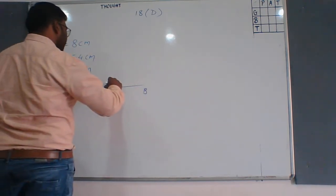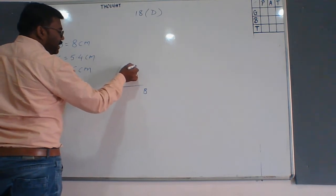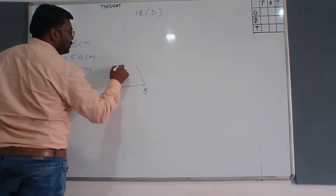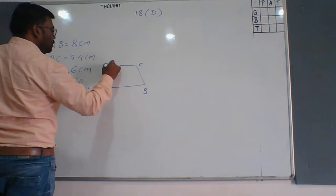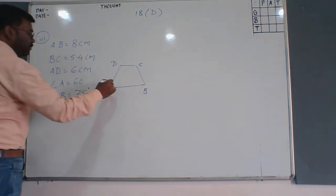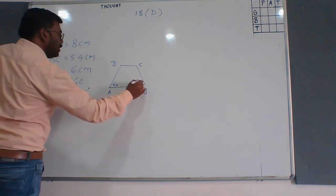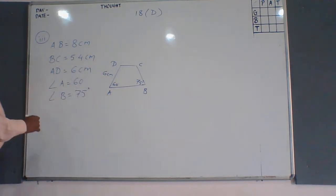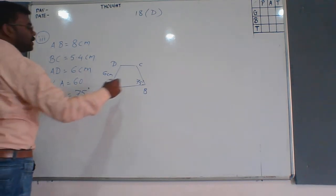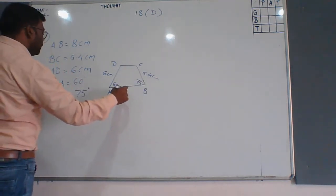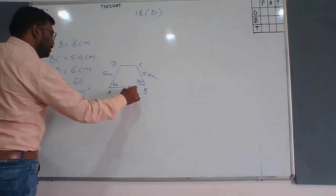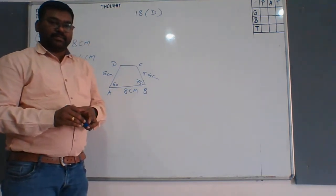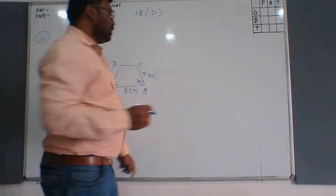In the rough diagram: AB is the base, angle A is 60 degrees, angle B is 75 degrees, AD is 6 cm, BC is 5.4 cm, and AB is 8 cm. This is our rough diagram. Now for the actual diagram, first we will construct the base AB of 8 cm.